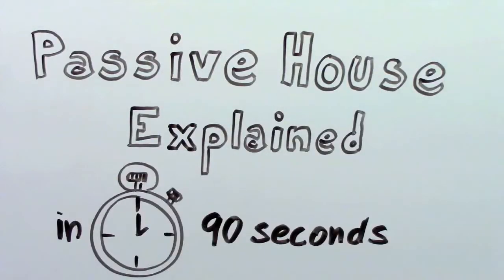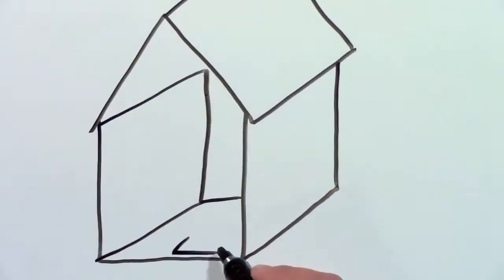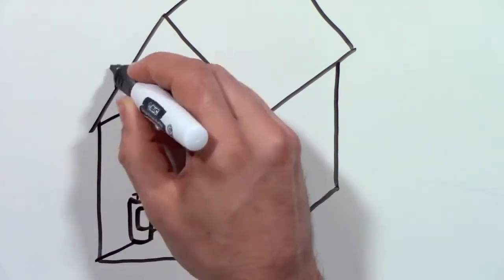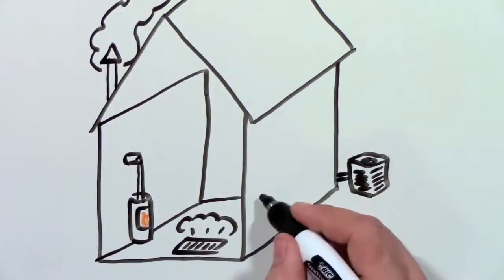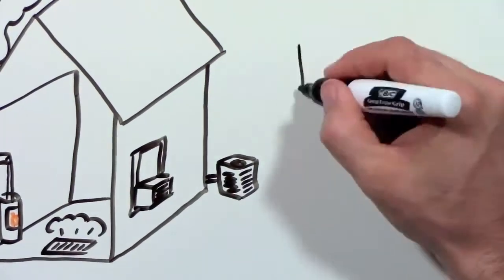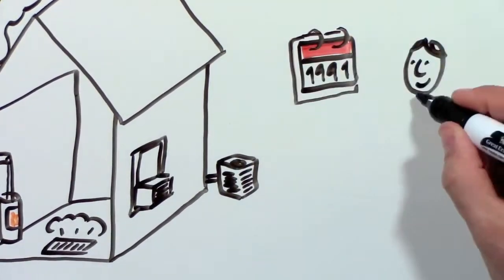Passive House explained in 90 seconds. Does your house have a heater in the basement or maybe a fireplace? Probably also a central air conditioner or maybe a window unit. Did you ever wonder if it was necessary?